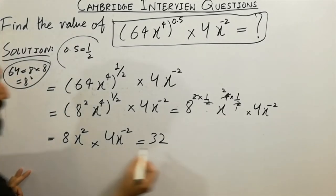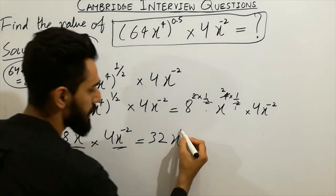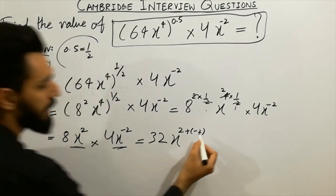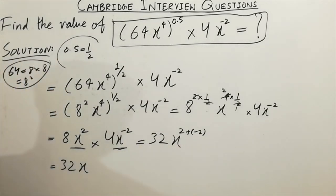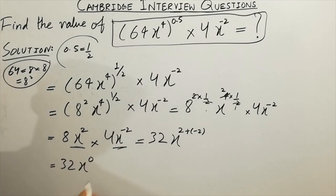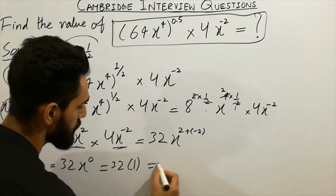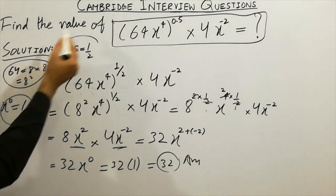Next step: x times x - you can add here because these are the same, then powers are to be added. So 2 plus minus 2. You can write here 32x^(2-2). 2 minus 2 will be 0. So 32x^0. Any value to the power of 0 always equals 1, so x^0 will be 1. We will get the value 32. The question asks to find the value of this problem, so the value is 32. I hope you have cleared the concept about this question.